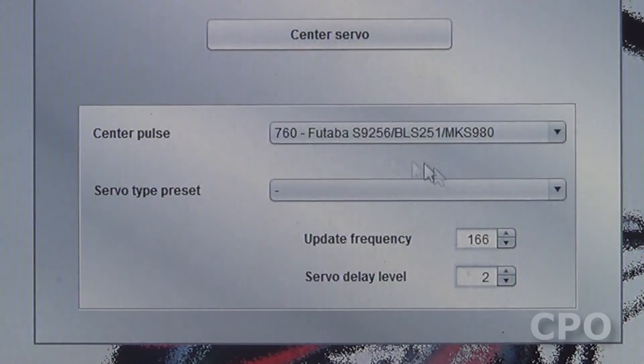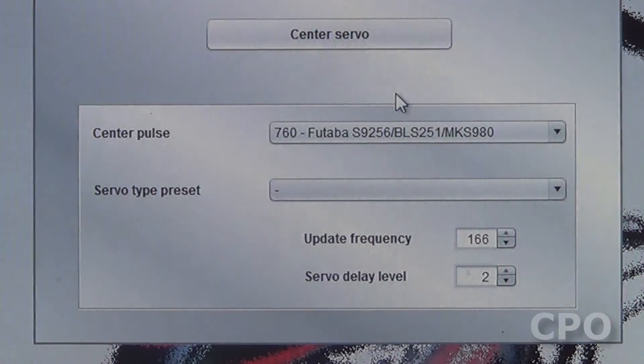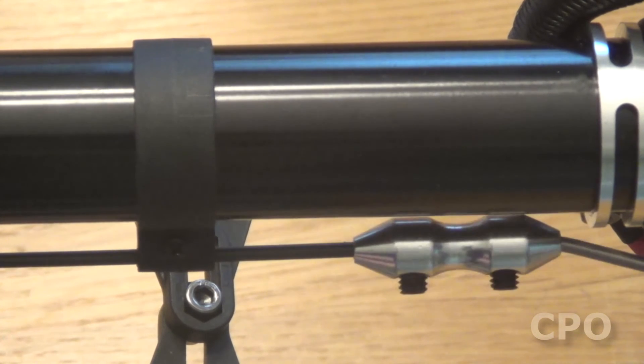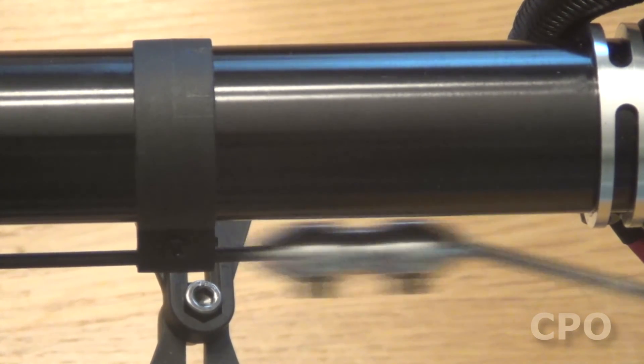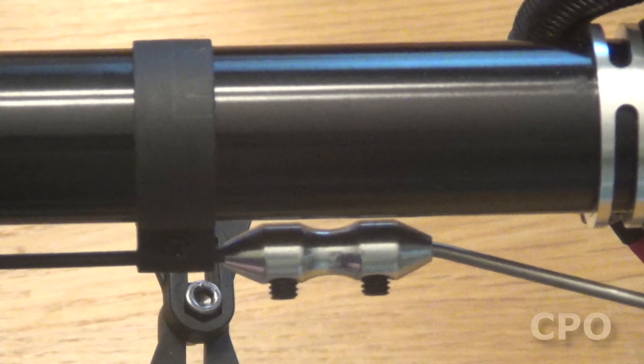And while we're still in the tail setup screen, it's probably not a bad idea to double check your center pulse, update frequency, and servo delay levels. And one more thing to check is that your front guide for your tail control rod should be pushed as far forward as you can get it and still have free movement of your tail control rod. Being as close to this junction as you can get should help prevent any binding in the system.